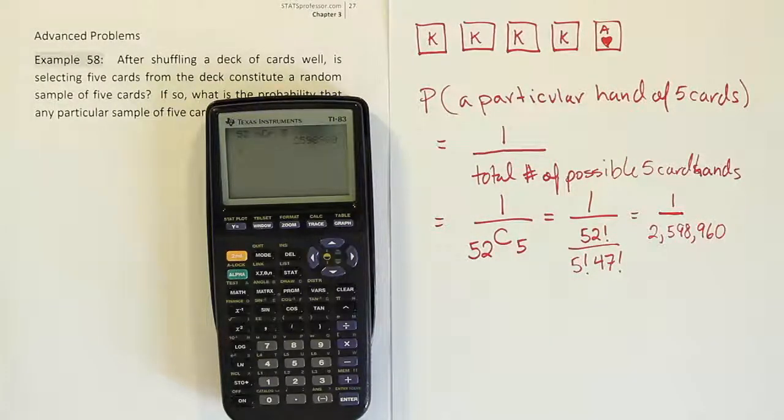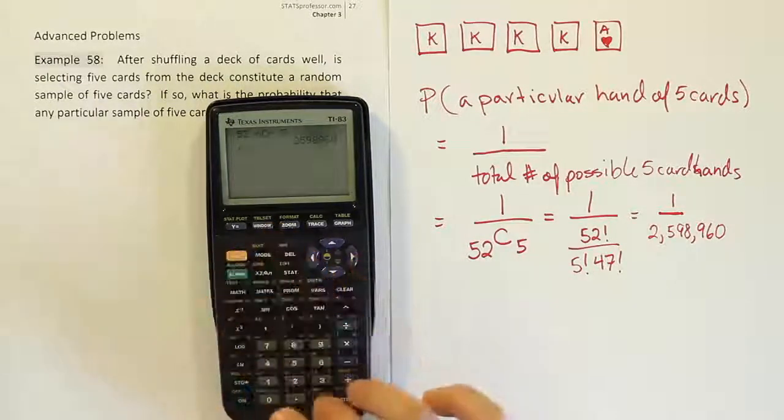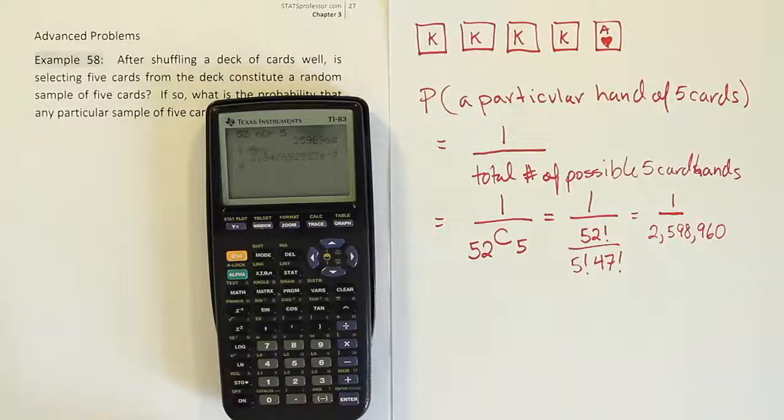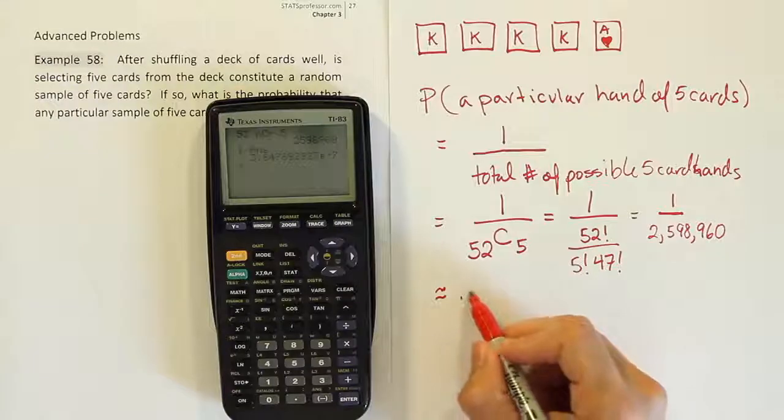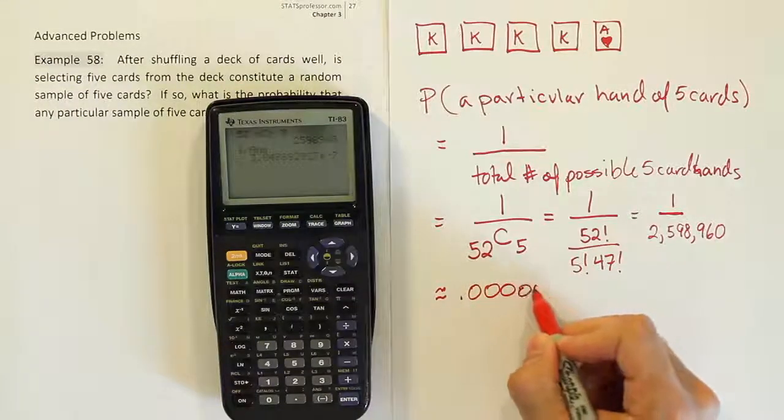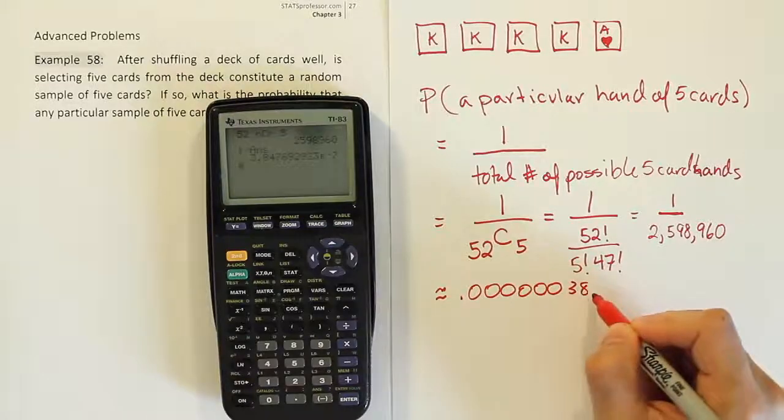And then at that point, all that's left to do is to divide these two and we get a decimal. Obviously, the decimal here is going to be pretty small. If I do that just to see what it is in the calculator, it's scientific notation. So the answer is approximately there's going to be six zeros after the decimal point here.